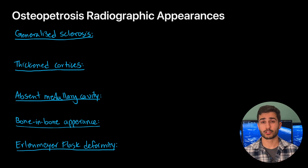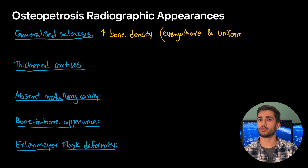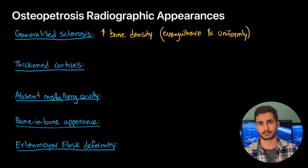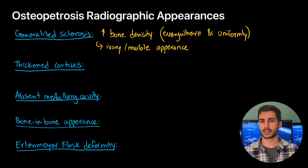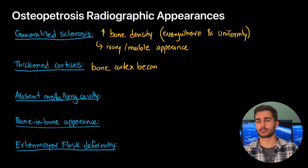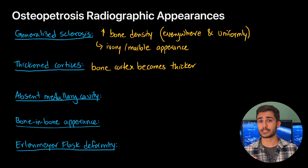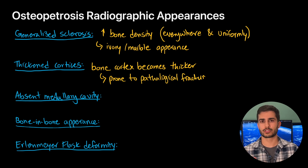Generalised sclerosis means increased bone density all over the bones. Osteopetrosis is primarily characterised by a diffuse increase in bone density, where the bones are uniformly dense and opaque on x-rays, sometimes described as having a marble or ivory appearance. Unlike osteoporosis where cortical thinning is prominent, osteopetrosis presents with markedly thickened cortices — the opposite. Despite that, this increased density actually makes the bone more brittle and prone to pathological fractures, which are fractures caused as a result of the underlying pathology.